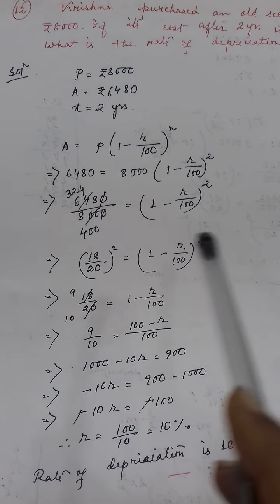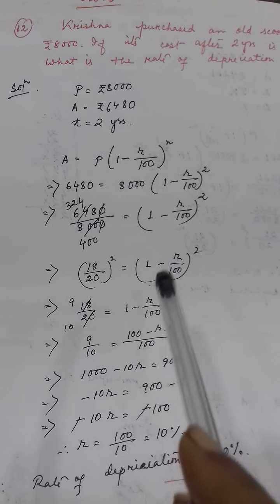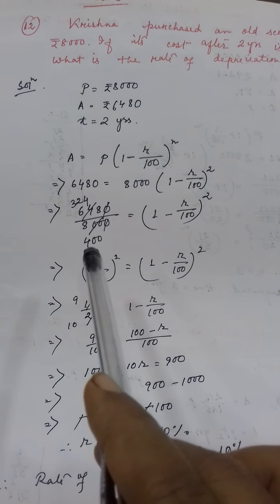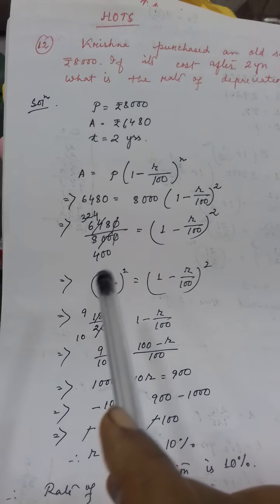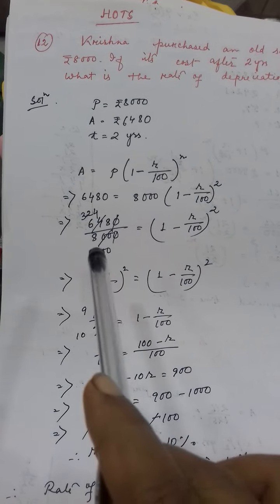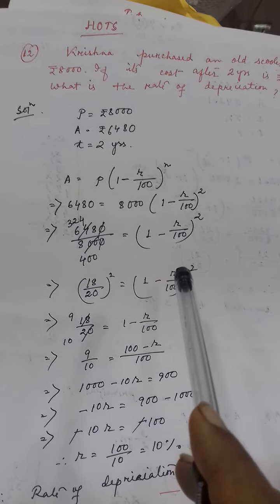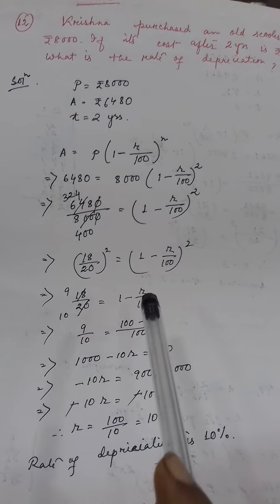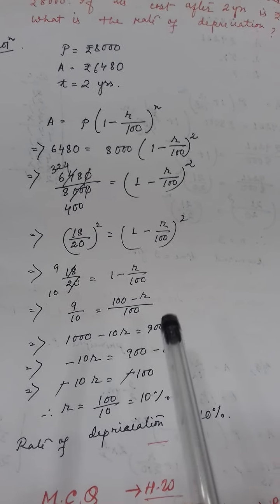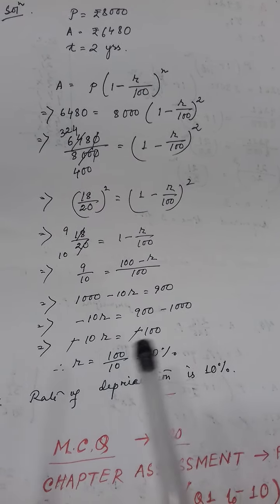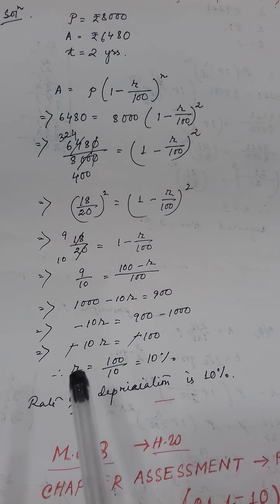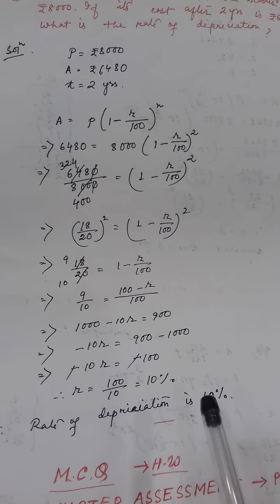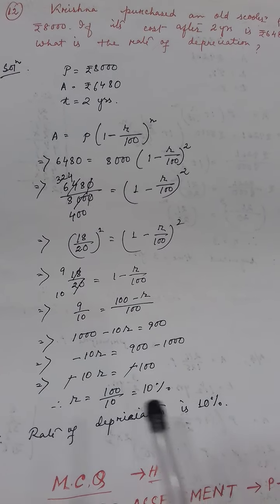As it is depreciation, there will be a minus sign in the formula. Place the values and calculate. To find the rate, make the powers the same on both sides: 324 by 400 — since 18 squared is 324 and 20 squared is 400, both sides now have power 2. Remove the powers, equate the bases, and solve. The calculation gives r equal to 10%. So the rate of depreciation is 10%.